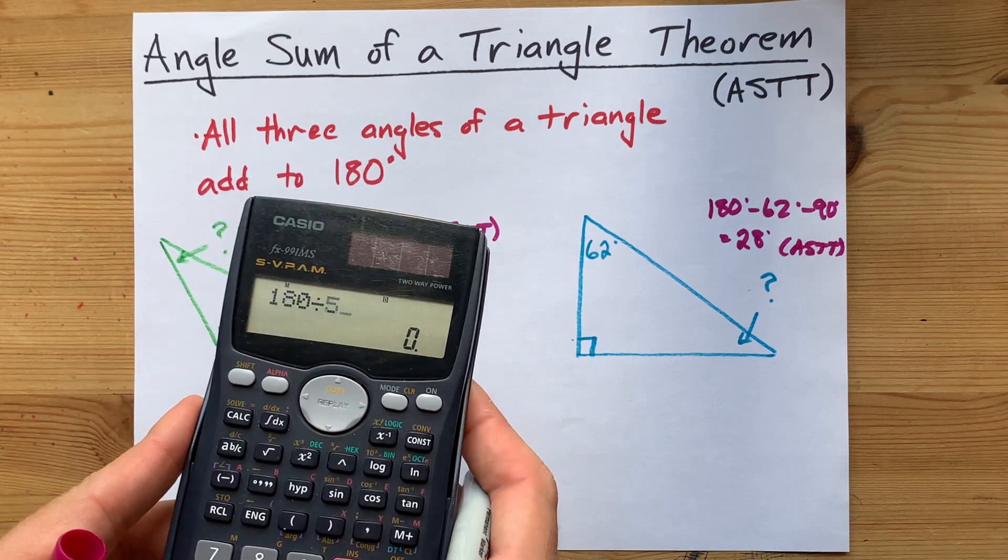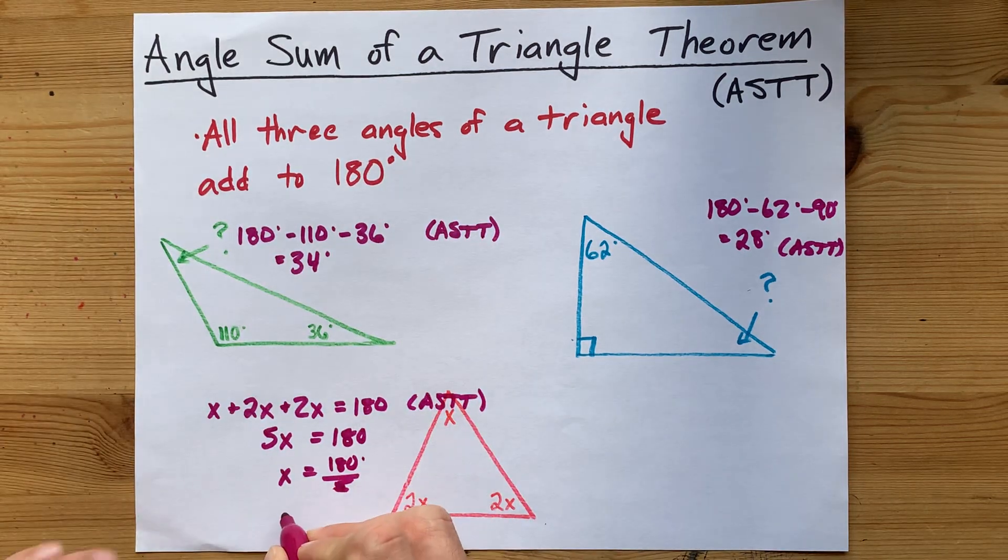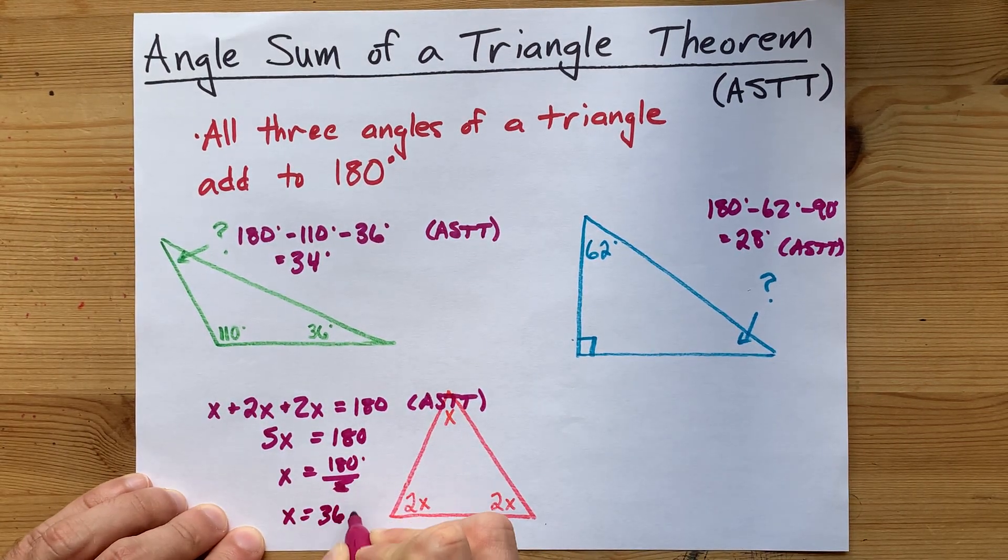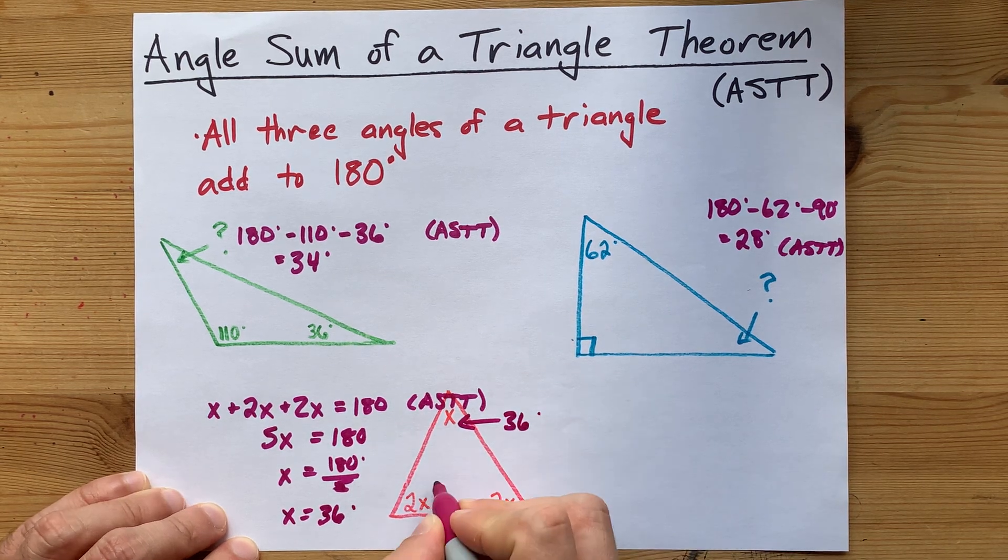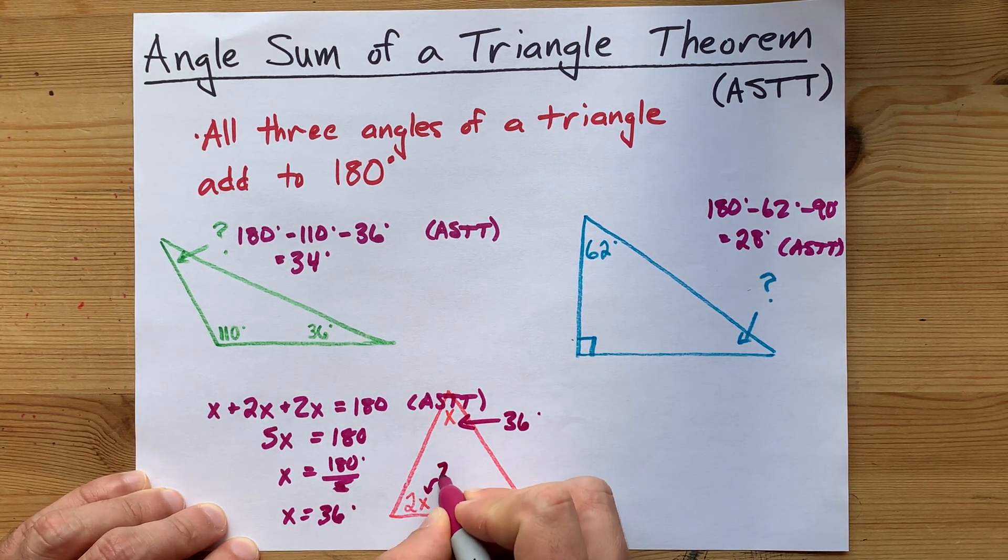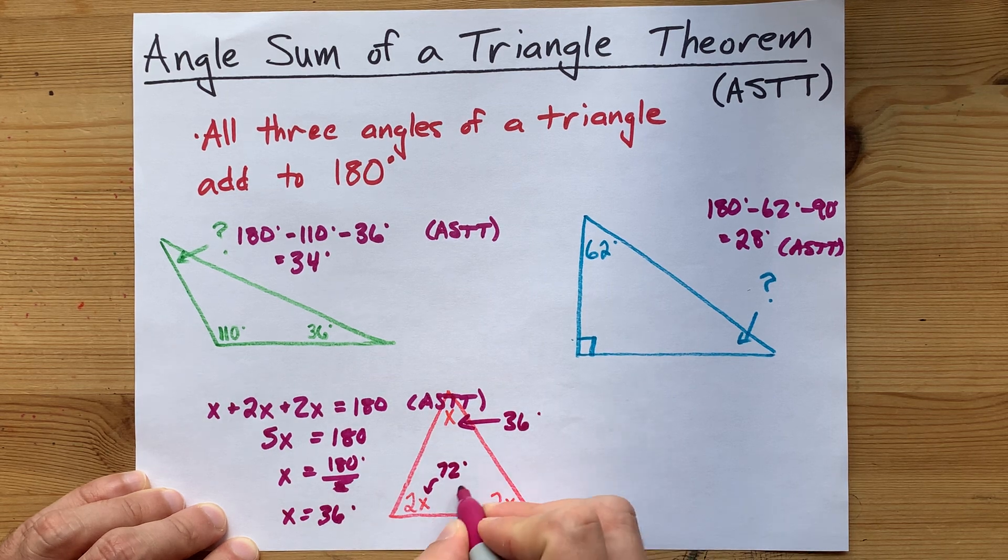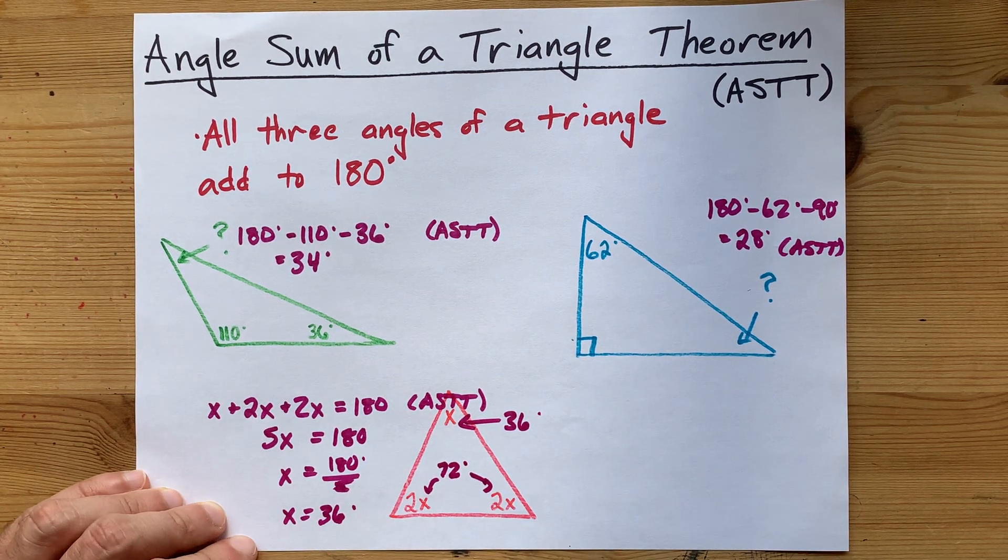180 divided by 5 gives me 36. Each x is 36 degrees here, which means that that was a 36 degree angle. Two times that would be 72 degrees, and then that one is also 72 degrees.